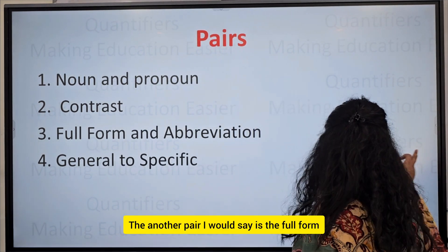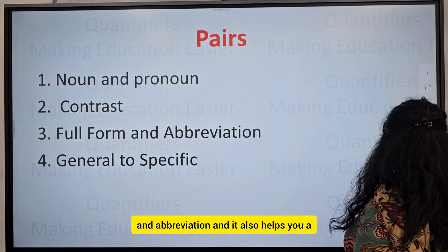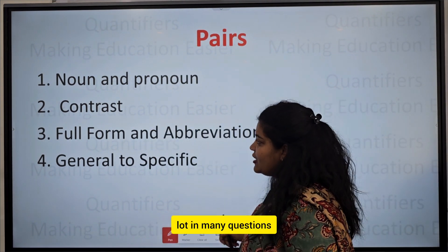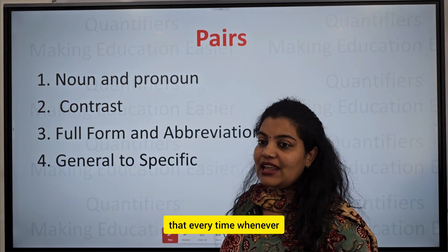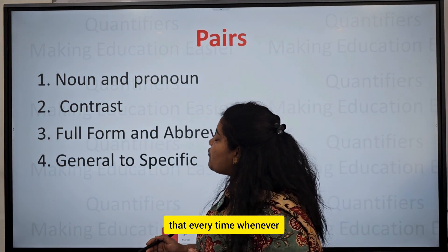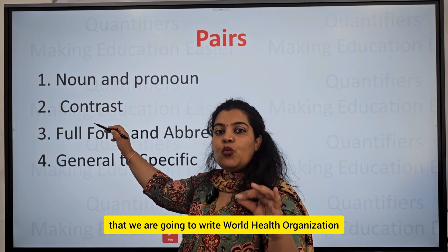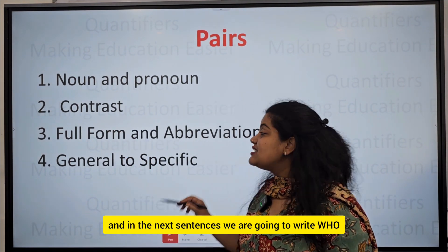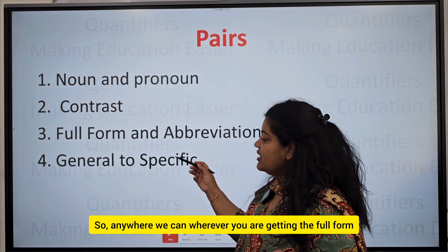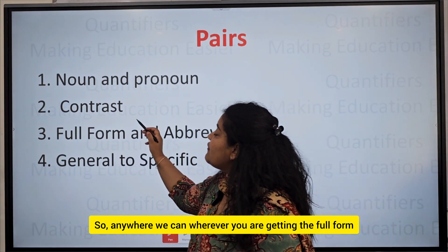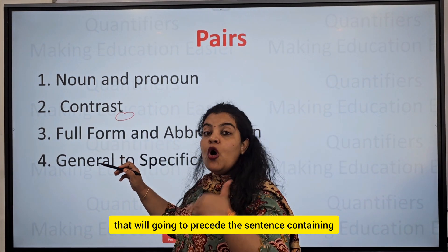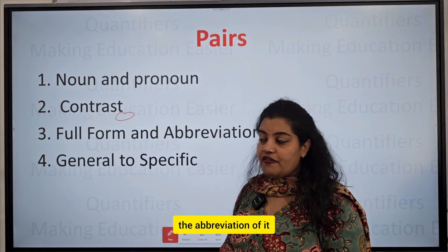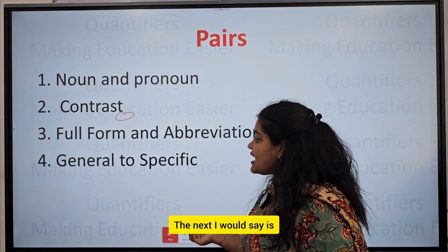Another useful pair is full form and abbreviation. Whenever you encounter the full form, for example 'World Health Organization,' it will precede the sentence containing its abbreviation 'WHO.' So the sentence with the full form always comes before the sentence with the abbreviation.